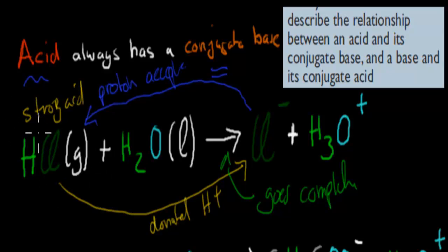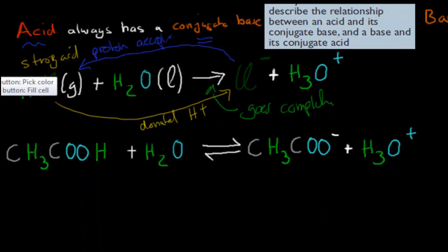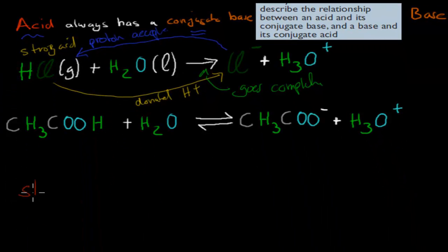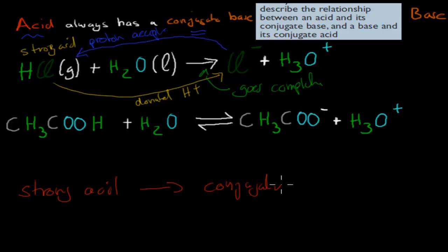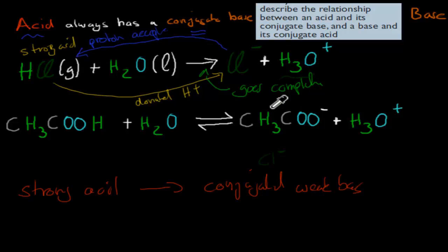Chlorine ions are happy to stay as chlorine ions; they won't grab the hydrogen of hydronium ions and become hydrochloric acid. That's because a strong acid produces a very, very weak conjugate base. Strong acids have a very weak conjugate base — so weak that the reversible reaction never happens. What I mean by weak is that the chlorine ion has no intention of grabbing the hydrogen off hydronium; it's so stable that it stays a chlorine ion. Hence it's weak compared to a strong acid.